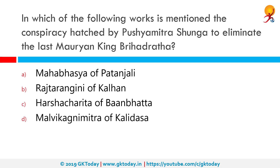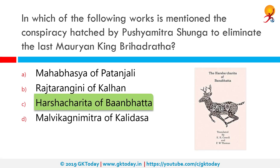In which of the following works is the conspiracy hatched by Pushyamitra Shunga to eliminate the last Mauryan king Brihadratha mentioned? The correct answer is the Harsha Charita of Banabhatta. Brihadratha Maurya was killed in 180 BCE, and power was absorbed by his general Pushyamitra Shunga, who took over the throne and established the Shunga empire by killing the former emperor in front of his military.